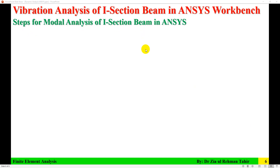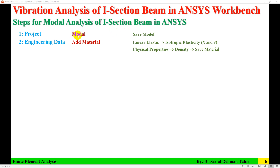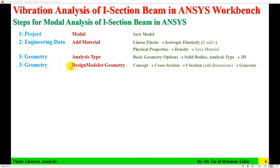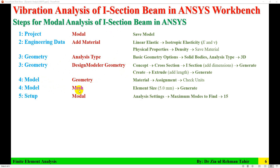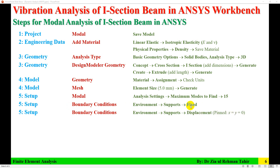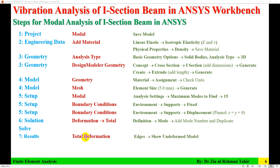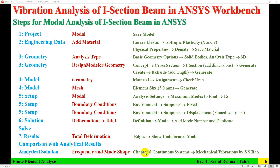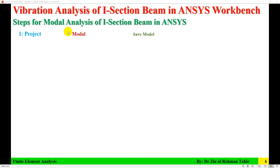The steps for modal analysis of an I-section beam in ANSYS are: first, start up the model; then add material; in the geometry Design Modeler, create the model; in the model, assign material; then meshing; set analysis settings to find maximum modes; apply boundary conditions — for fixed-fixed beam use fixed support, for simply supported use pin with displacements x=0, y=0; then add total deformation for mode shapes. The analytical solution for frequency and mode shape is taken from Chapter 8 of Mechanical Vibration by S.S. Rao.